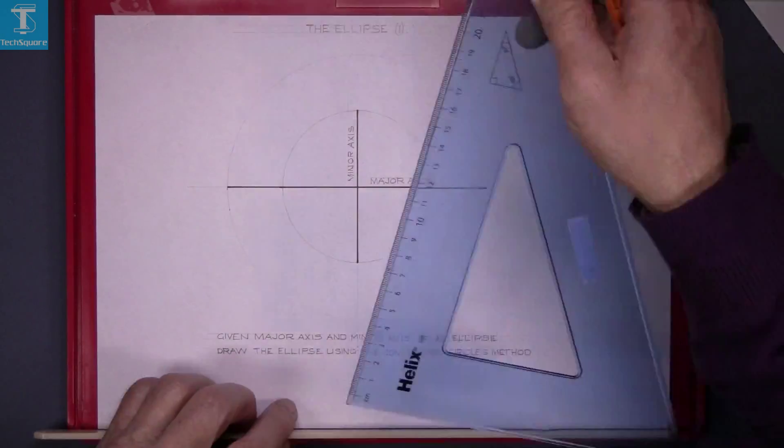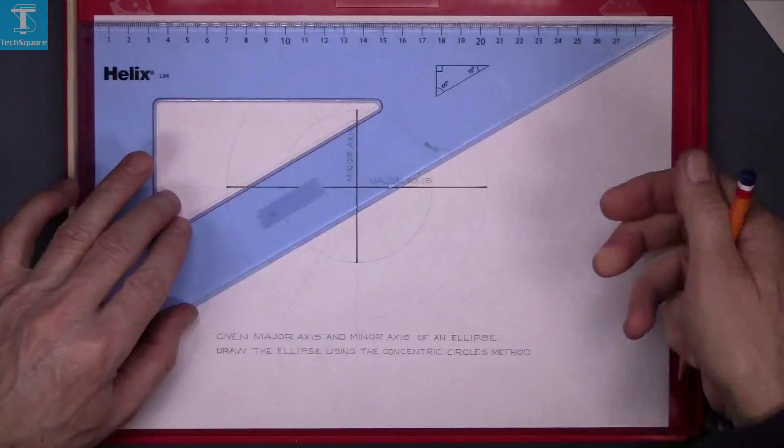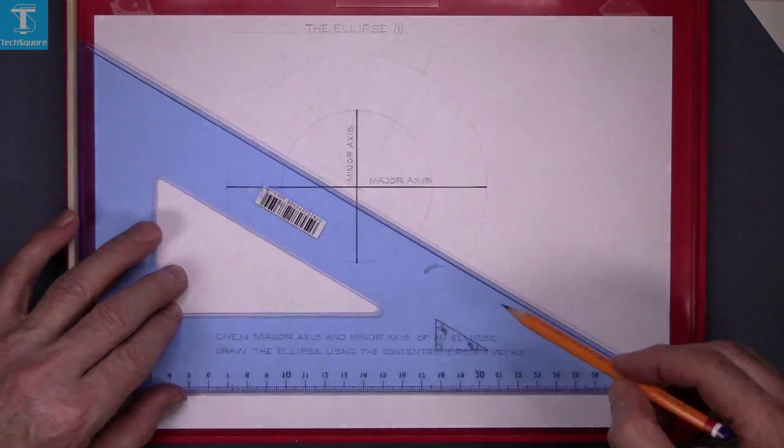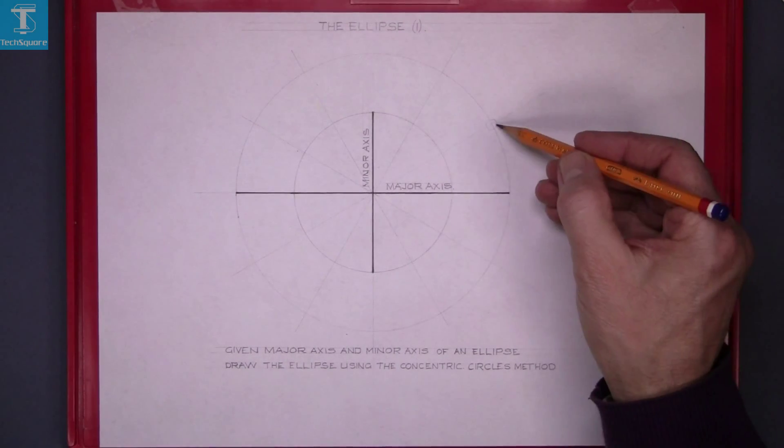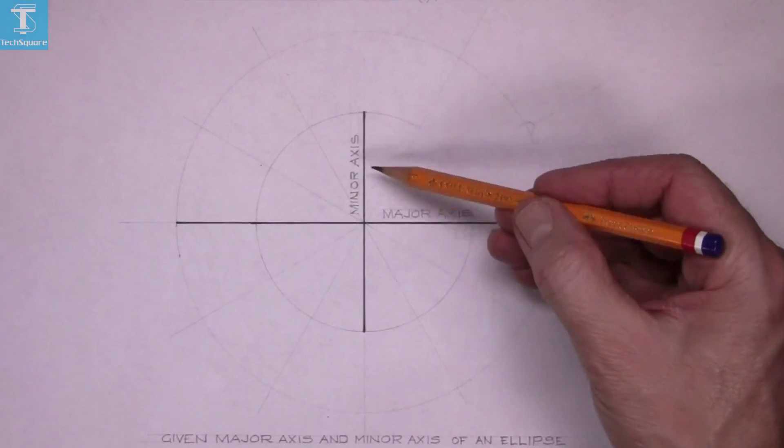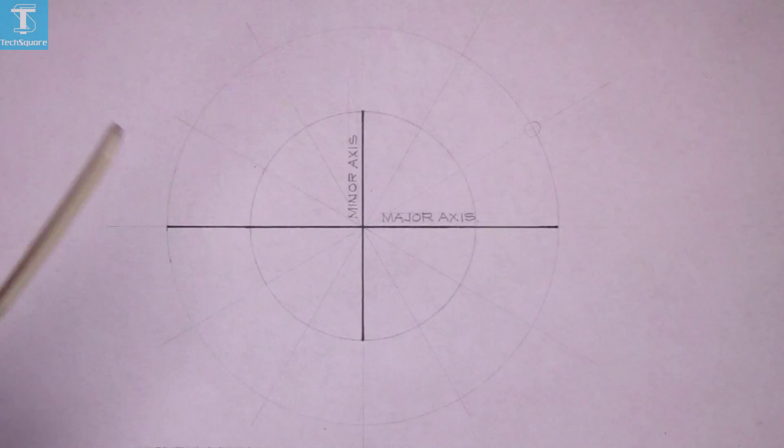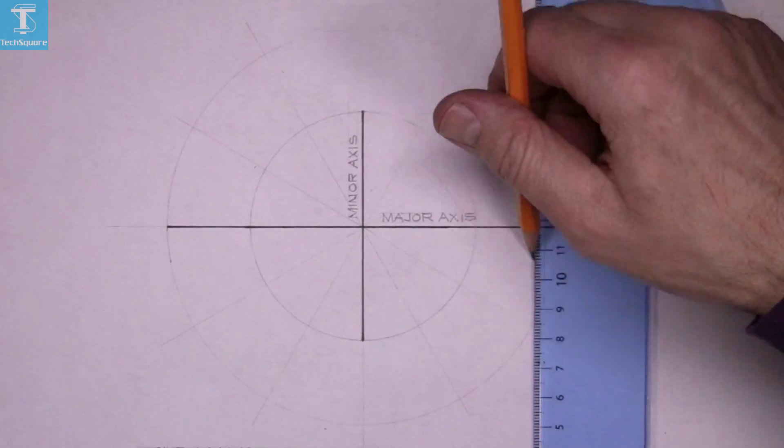Now with your 60 degrees set square, divide this circle into 12 equal parts. Now at the points on the major circle, draw vertically down. In other words, from the major circle draw parallel to the minor axis. So from the points on the major circle draw vertically down.